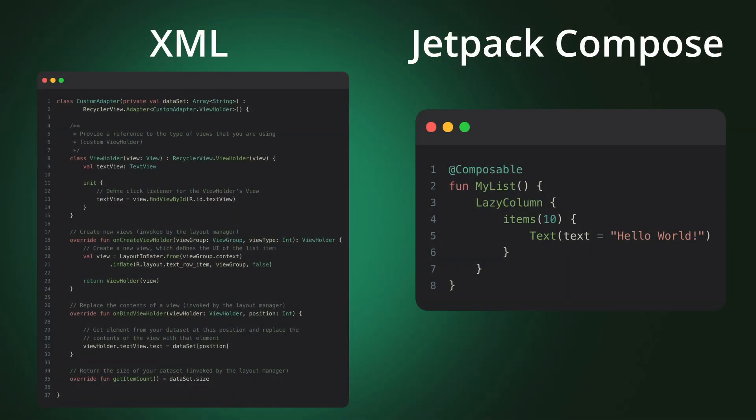On screen you'll see a comparison of how to create a scrollable list using XML versus Jetpack Compose. In Jetpack Compose we basically need a couple of lines, whereas in XML we need to use a RecyclerView and create multiple things to accomplish that.